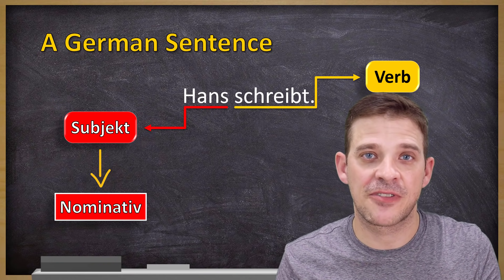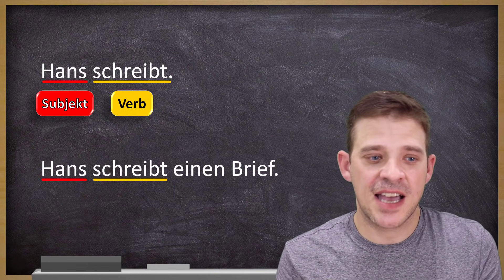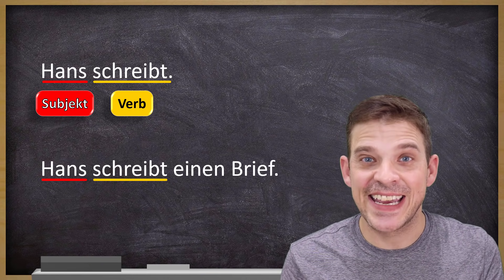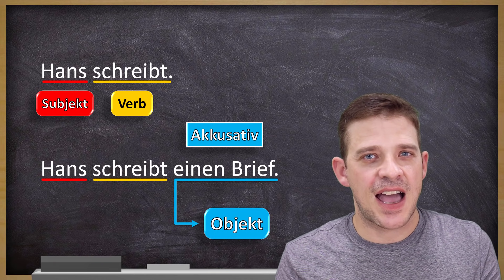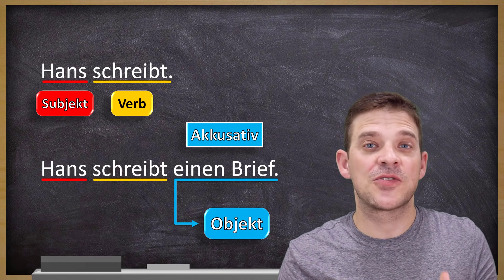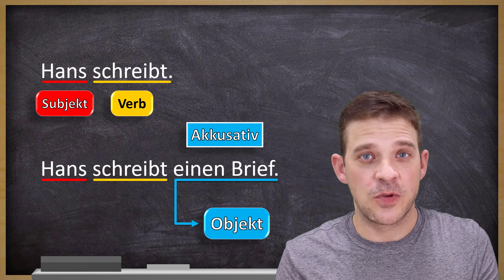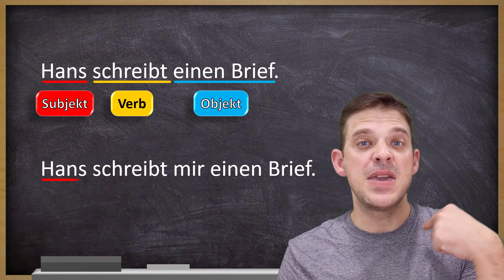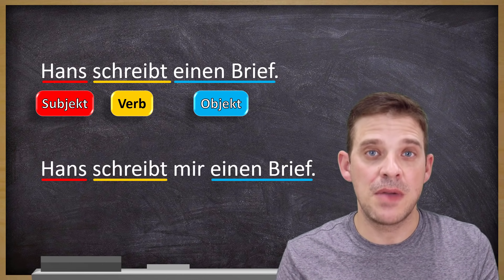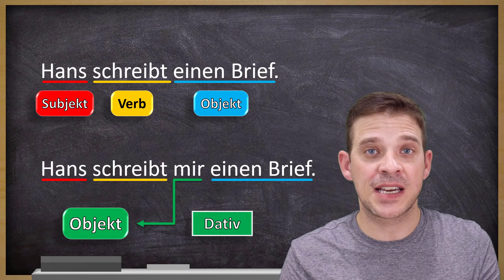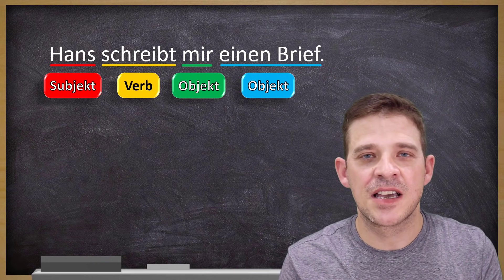Now let's add something to the sentence. Let's add an object: 'Hans schreibt einen Brief.' 'Einen Brief' is an object in the accusative. We can also say who he is writing this letter to: 'Hans schreibt mir einen Brief' — he writes a letter to me. And 'mir' is also an object, but in the dative.